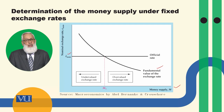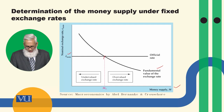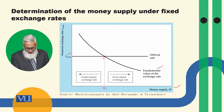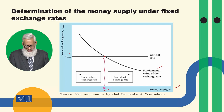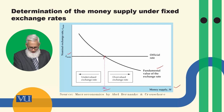The fundamental value exchange rate curve is negatively sloped. Where the official exchange rate and the fundamental value intersect determines what the money supply M1 should be. At money supply M1, the fundamental value equals the official exchange rate.